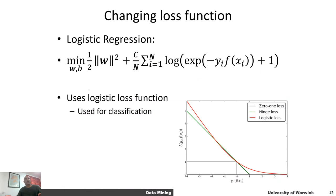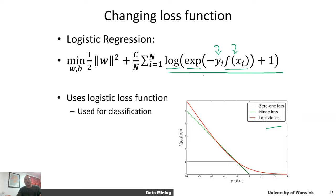The formulation for logistic regression uses the logistic loss function. It looks mathematically complex — there's a product of the target class label with the prediction output, we take an exponent of that, then take a log — but it's easy to understand if you break it down. For a positive example where y = +1 and f(x) = w^T x, we want f(x) to produce a positive score. If y times f(x) is positive, then the exponent (with the minus sign) will be small, and the log of a small number is small, so the loss is small.